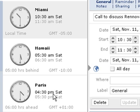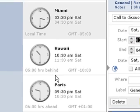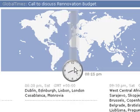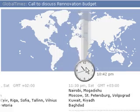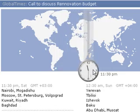And for my designer in Paris, that will be 4:30 p.m. and he's six hours ahead of me. And I can see any changes in real time too. And even if my designer decided to go and visit, let's say, Nairobi, I can easily see that that would be 11:30 p.m. Saturday for him.